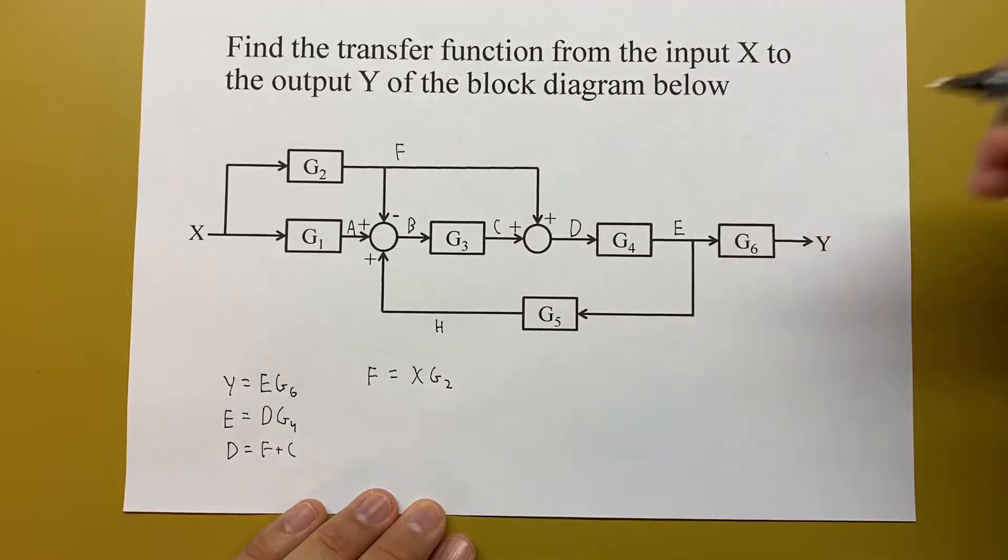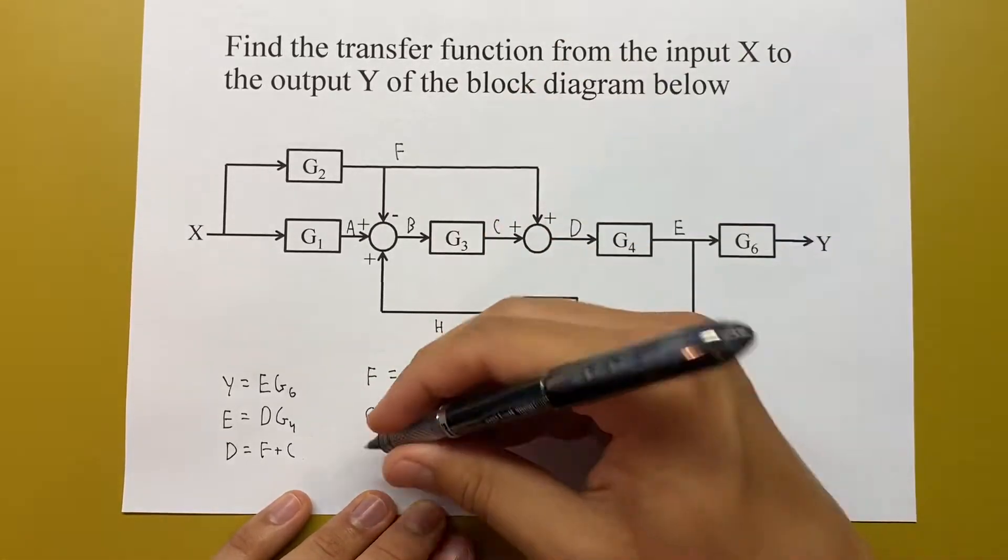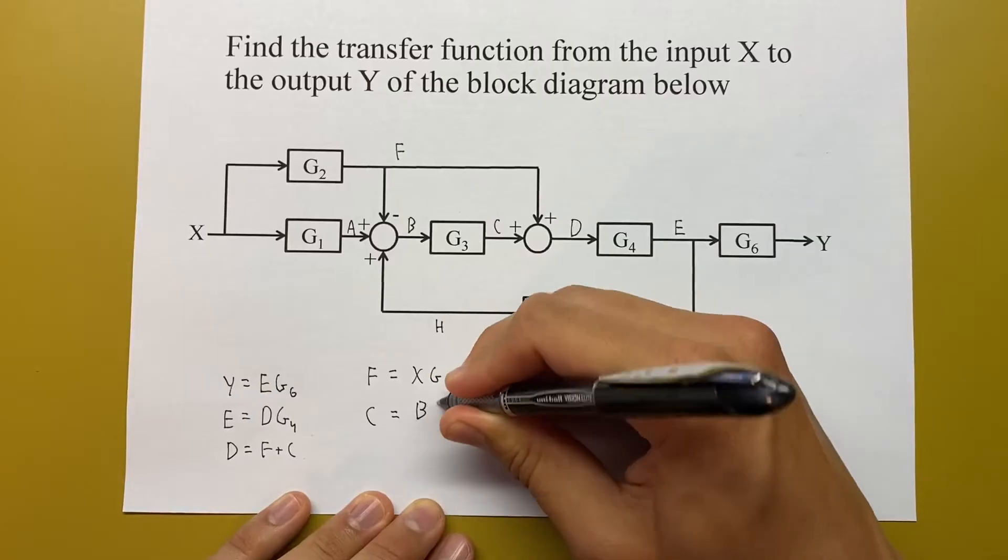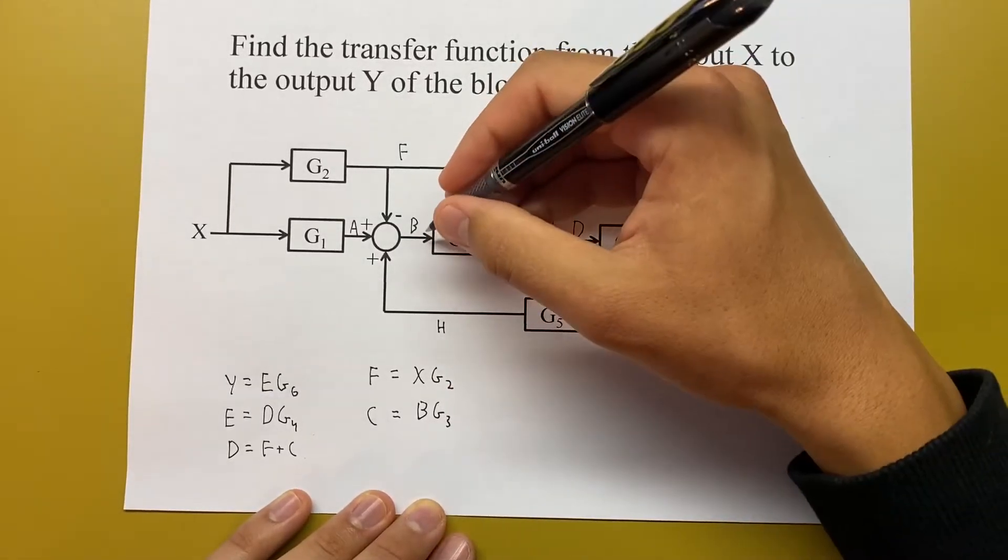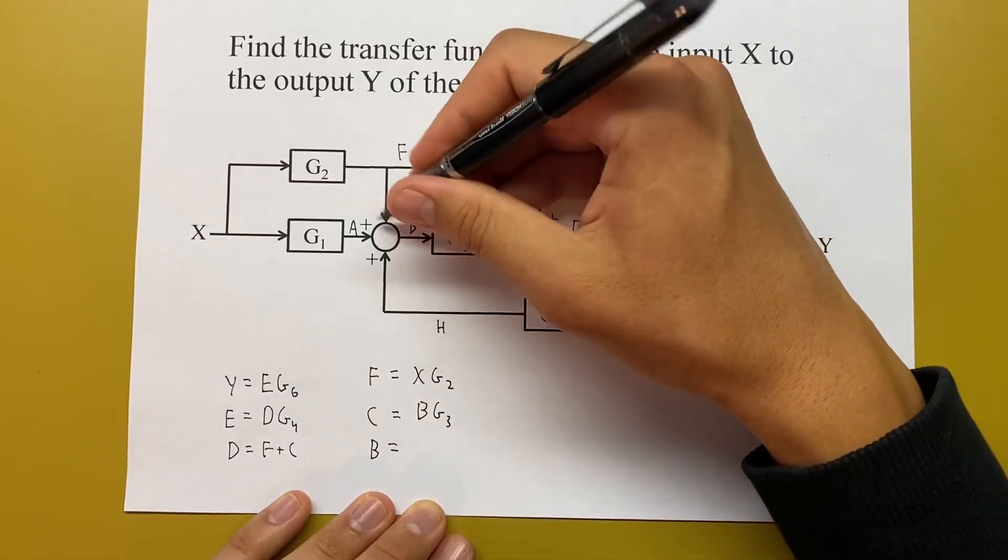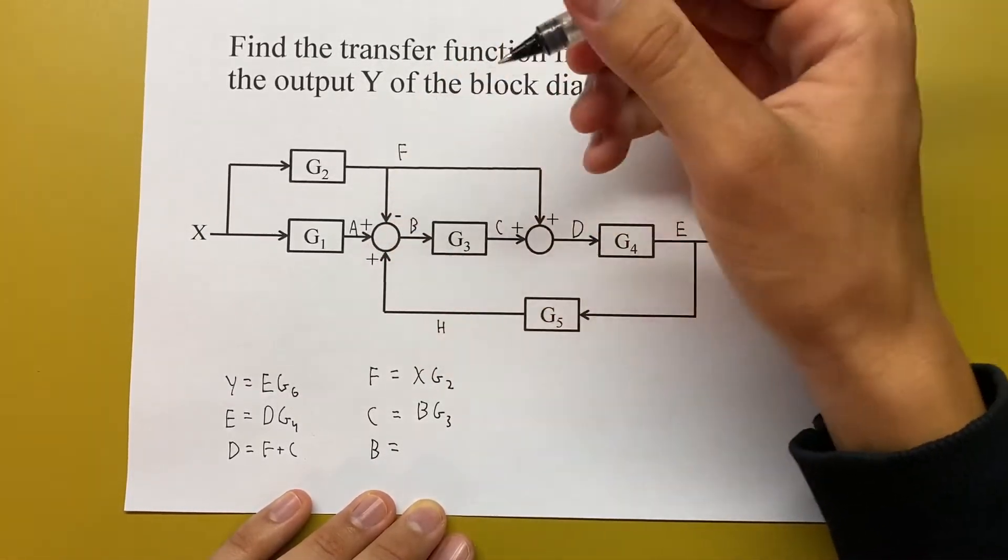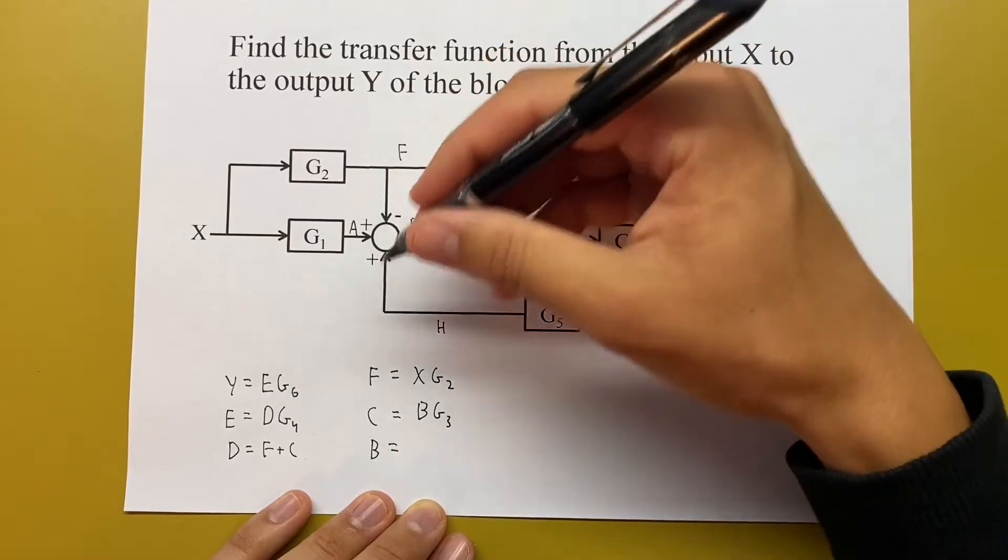We'll go back to C. C is just going to be B times G3. And then solving for B, it's the combination of all the things coming into this summing junction, so we're going to have A minus F plus H.